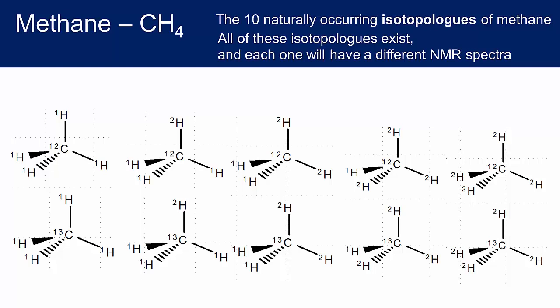The probability of a molecule being a particular isotopologue is the product of the probabilities of each of the atoms being what it is, times the number of ways to form that particular isotopologue. For example, the probability that a methane molecule has one carbon-12 atom and four protium atoms is the probability that the carbon is carbon-12, times the probability that each of the four hydrogens is a proton. And this is close to 99%.